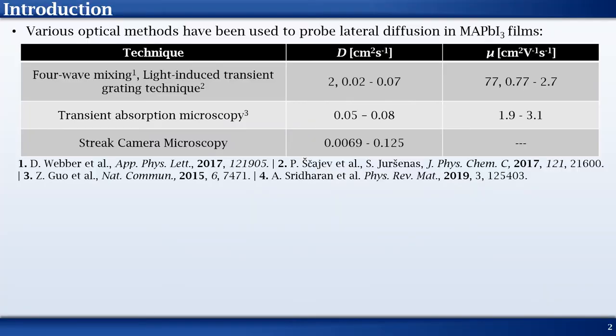Let us first take a quick look at the existing literature on this subject. Various optical methods have been used in the past to measure lateral diffusion in perovskite thin films. Due to the impact of grain boundaries, lateral diffusion was found to be critical. This table displays a few of these measurements.